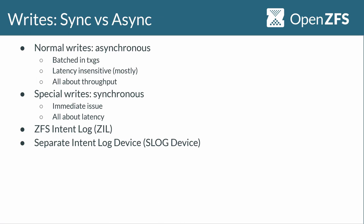ZFS has a subsystem to make synchronous writes more efficient called the ZFS Intent Log, or ZIL. The ZIL works by having specially allocated areas where it tries to put the data as fast as possible so it can return control to the user quickly. The ZIL is the ZFS subsystem and the blocks it manages. There's also a concept called a Separate Intent Log device, or SLOG device — an actual separate disk you attach to your pool that the ZIL will try to preferentially use to store your data.